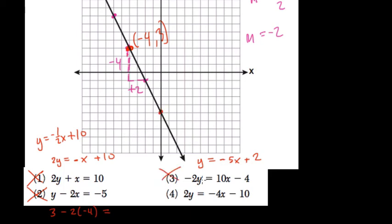The slope is negative 5. The answer is 4. Let's just check it. 2y equals negative 4x minus 10. Divide everything by 2, and y equals negative 2x minus 5, which is exactly what we see right here. The slope is negative 2.